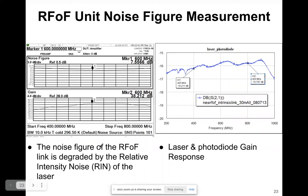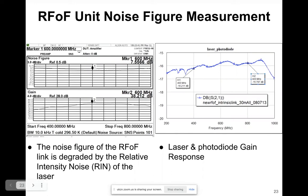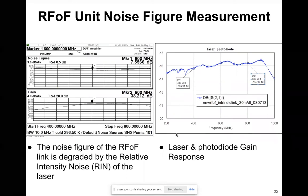That noise figure value is quite high because it is dominated by the relative intensity noise of the laser. On the right, the gain between the laser and the photodiode is around 16 dB, but I think those measurements were performed with the inclusion of an amplifier, considering the DC modulation gain of the laser and the RF efficiency of the photodiode.